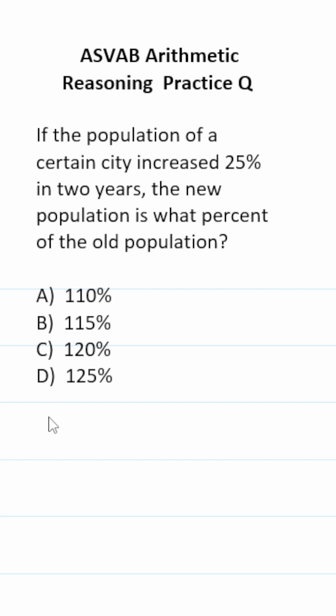The key to working out a problem like this is to come up with your own numbers that are very easy to work with. For example, I'm going to say the old population was 100 people.